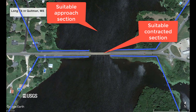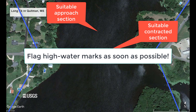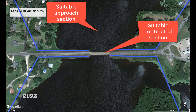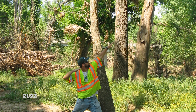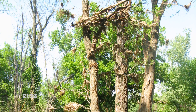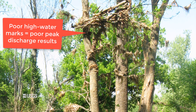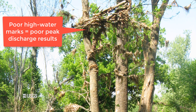Like with any indirect measurement or high water mark flagging campaign, it is important to recover the high water marks as soon as possible. Embankments are usually grassy and can rebound quickly following flood events, and rain is excellent at washing away seed lines. Always remember, if your high water marks are poor, it usually means your peak discharge indirect results will be as well.